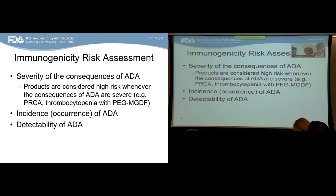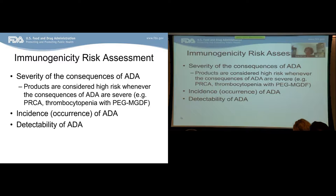Two examples of severe consequences are pure red cell aplasia associated with erythropoietin — where anti-drug antibodies neutralize erythropoietin, causing profound anemia — and severe thrombocytopenia in healthy human subjects treated with pegylated megakaryocyte growth and development factor. In some of those patients, thrombocytopenia lasted for several years and required treatment with immunosuppressive agents and transfusions. These incidents show that the consequences of anti-drug antibodies can be extremely severe even when incidence is quite low.